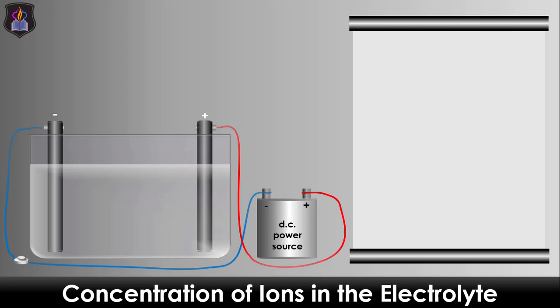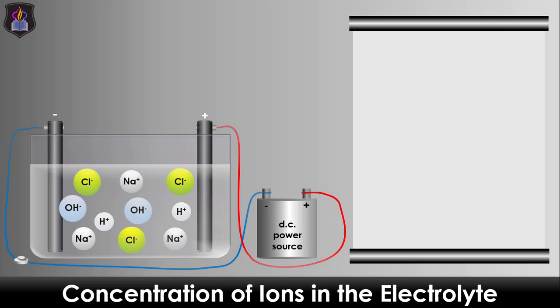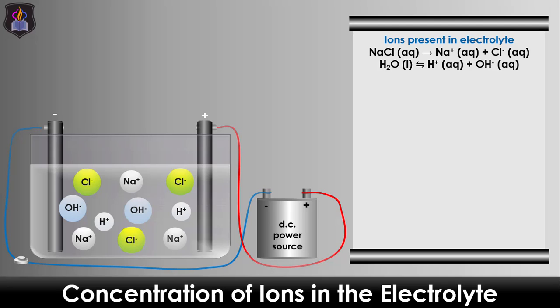Let's use the electrolysis of concentrated sodium chloride solution, also known as brine, as a case study. In brine, sodium ions and chloride ions are of higher concentration than hydrogen ions and hydroxide ions, since there are more salt particles than water particles in the solution.